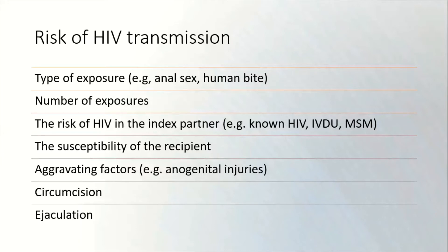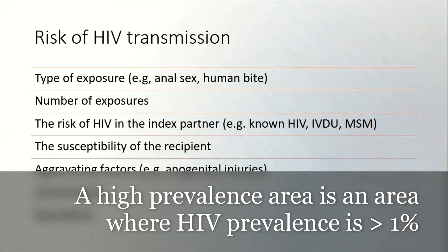The risk of HIV in the index partner is important — so are they known to have HIV already? Are they taking any treatment for it? Or is the index partner in one of the certain groups with higher risk of having HIV? Within the UK, the higher risk groups are likely to be men who have sex with men, IV drug users, and individuals who have immigrated to the UK from areas of high HIV prevalence, particularly sub-Saharan Africa.